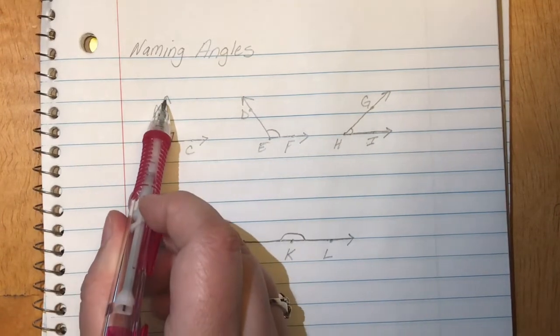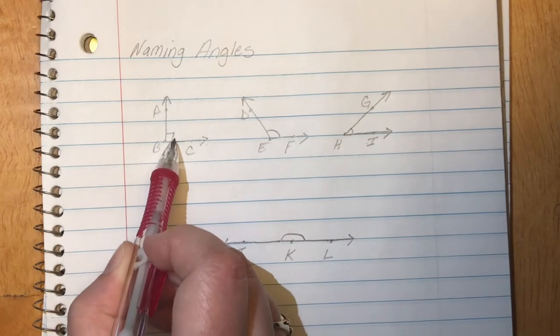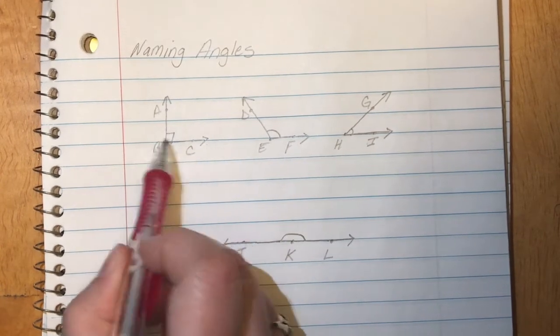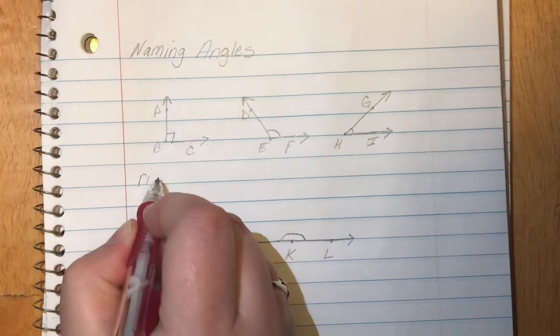Now when we have an angle that has a square corner and you'll notice there's a little square right here that looks like a capital L, we call this a right angle.